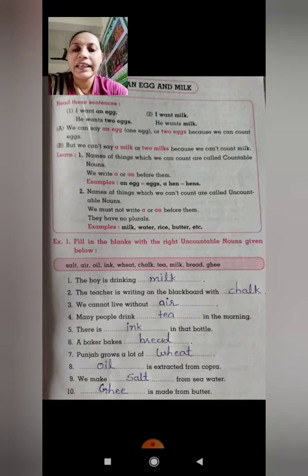Number 5: There is ink in that bottle. Yani ki bottle mein ink hai. Number 6: A baker bakes bread. Yani ki joh baker hai woh bread banata hai.